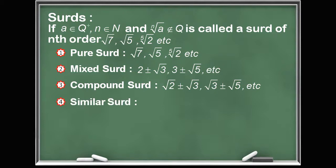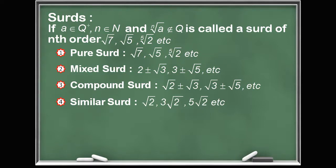The fourth kind is similar surds. If surds are different multiples of the same surd, then they are called similar surds. The ratio of similar surds is always a rational number. For example, root 2, 3 times root 2, and 5 times root 2 are all similar surds. If you divide 5 root 2 by 3 root 2, you get 5 by 3, which is a rational number.